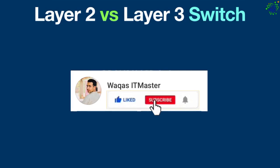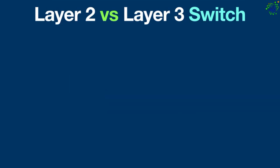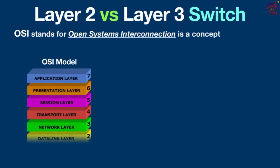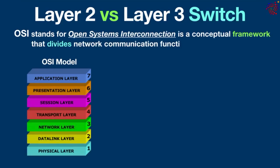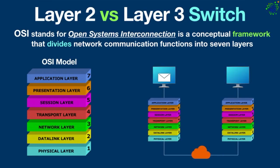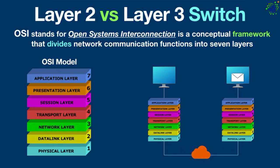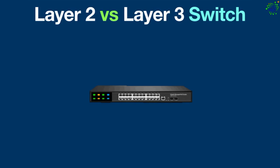Before that, we need to first understand the definition of the OSI model and network switch. OSI stands for Open Systems Interconnection — it is a conceptual framework that divides network communication functions into seven layers. That means data goes down the seven layers of the OSI model on the sending device and then goes up the seven layers on the receiving device.